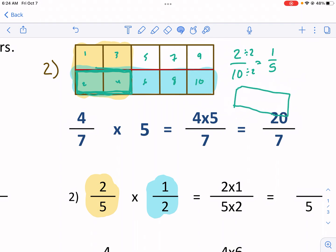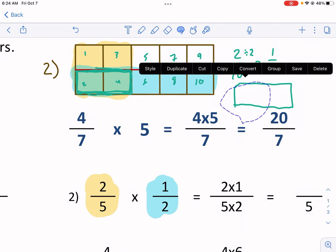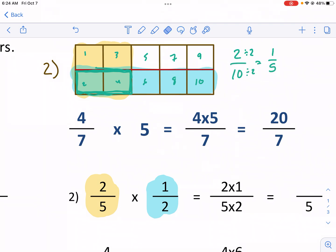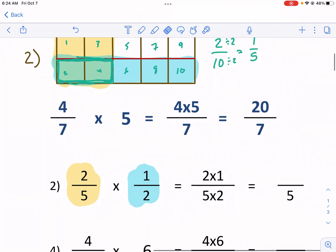See how I have five of these two tenths is the same thing as one fifth. I could flip this different ways and it would represent one fifth of my fraction. That's why it's equivalent. It's an equivalent fraction. So this becomes one fifth.